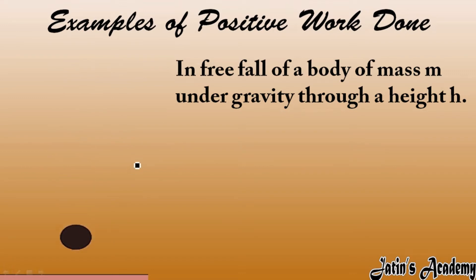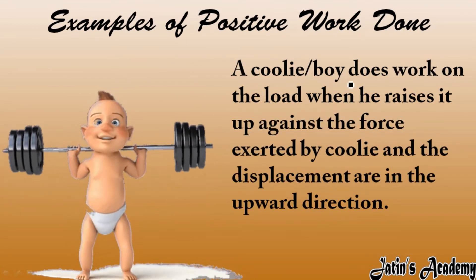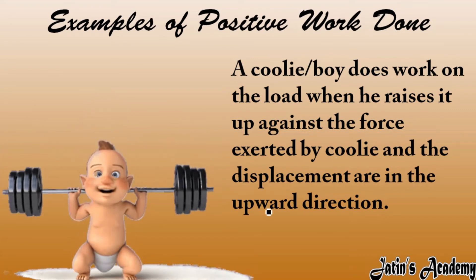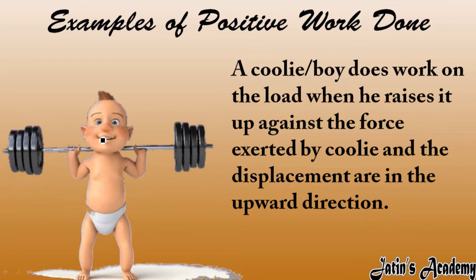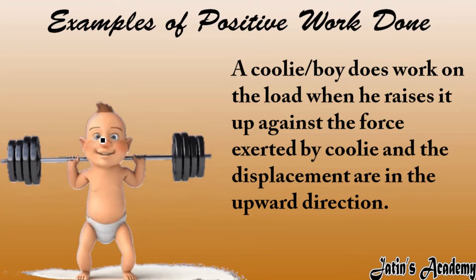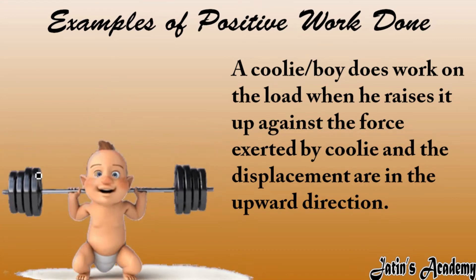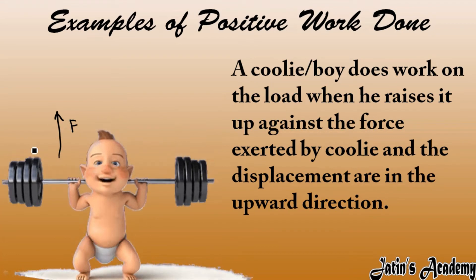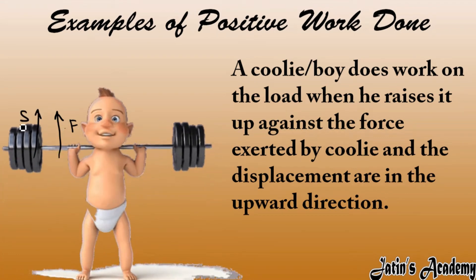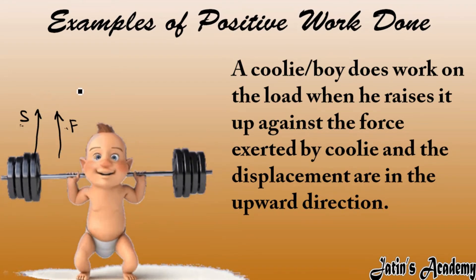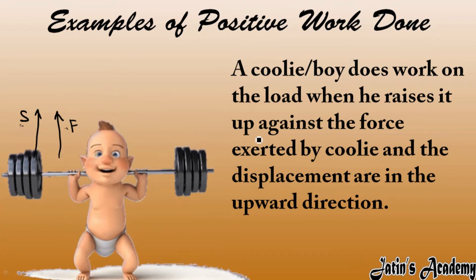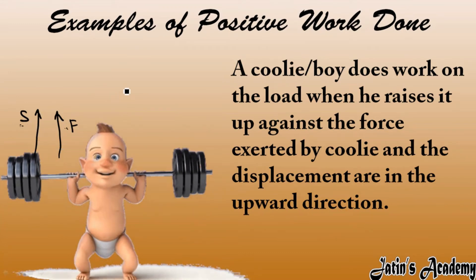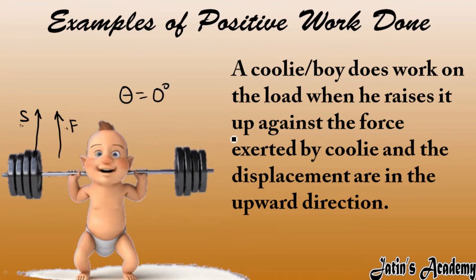Next we have a coolie or a boy doing work on a load when he raises it up. The force exerted by the boy and the displacement are both in the upward direction. The boy applies force in the upward direction and this dumbbell or weight has displacement in the upward direction. Both force and displacement occur in the same direction, so the angle between them is zero degrees. Although it is against gravity, the angle is zero, so this is an example of positive work done.